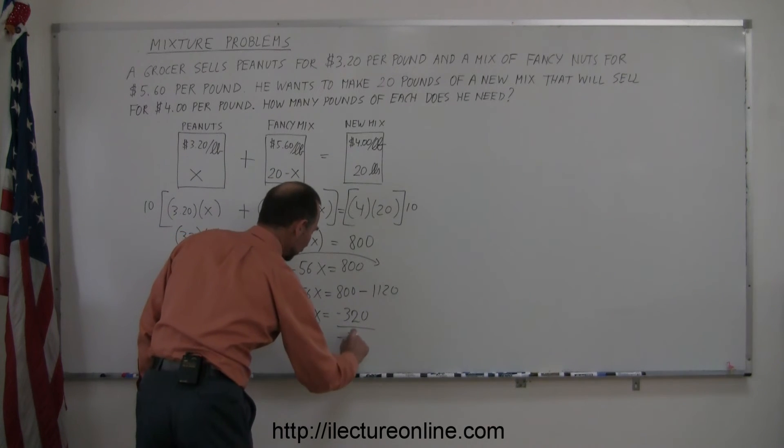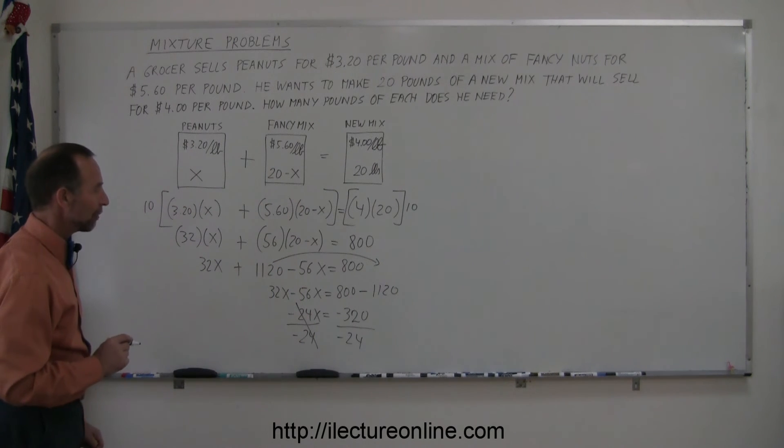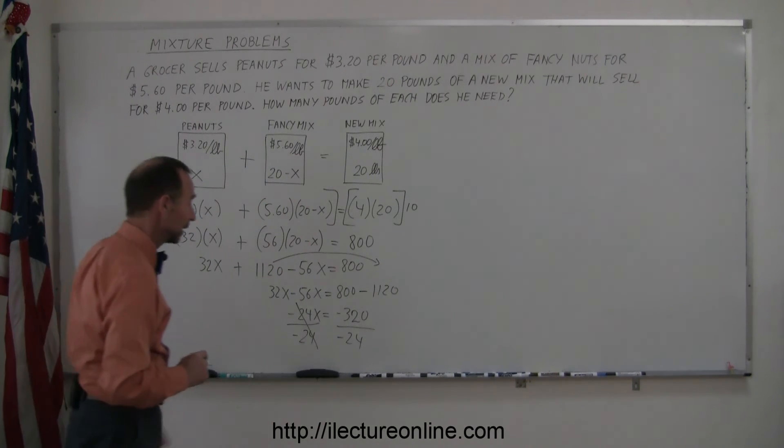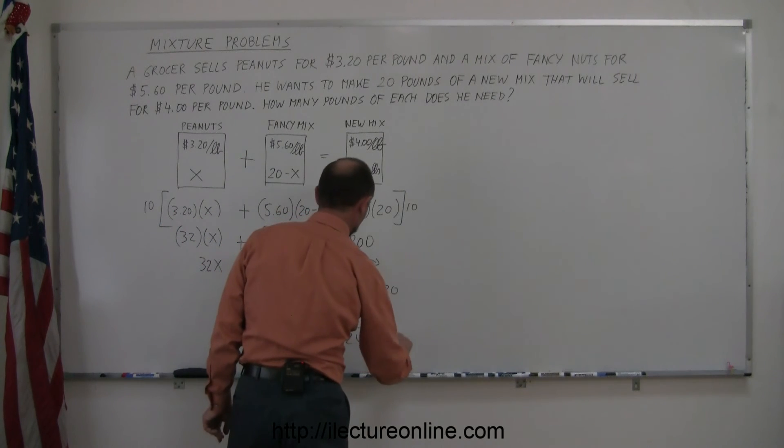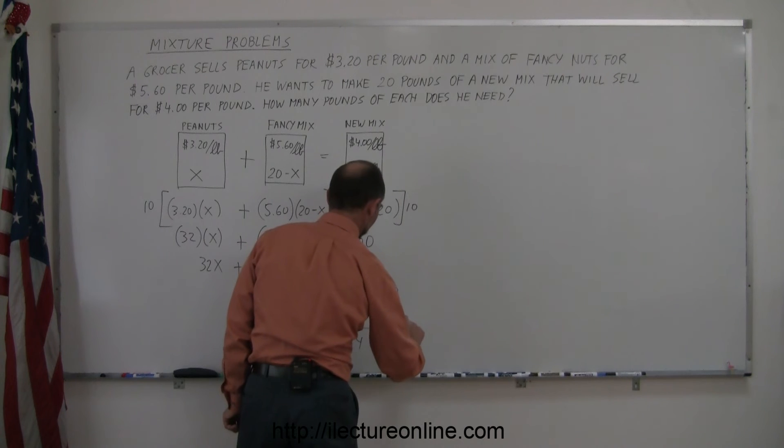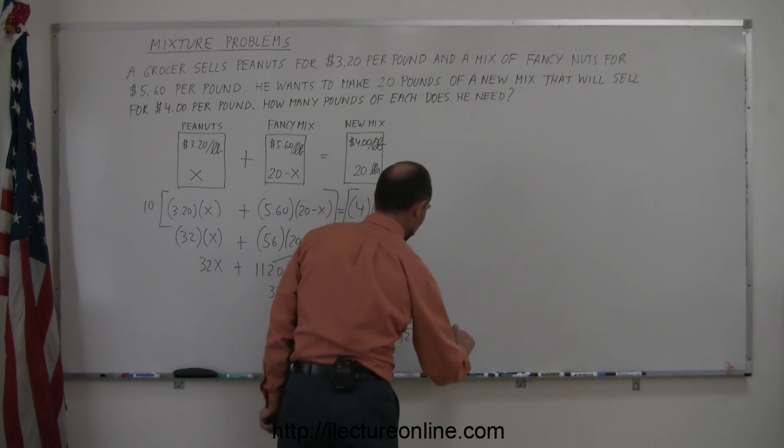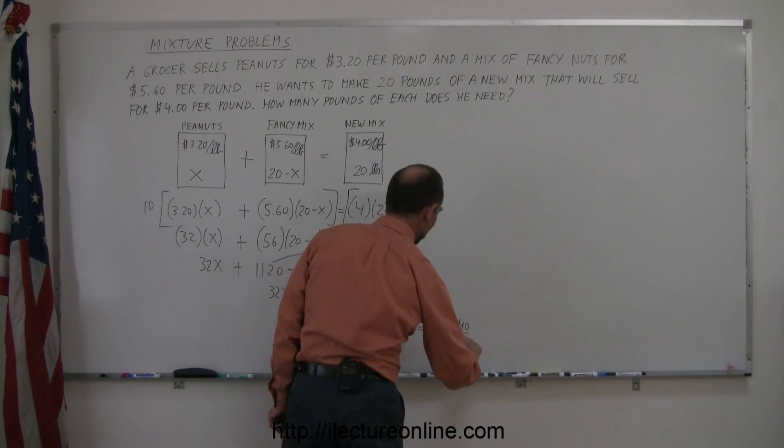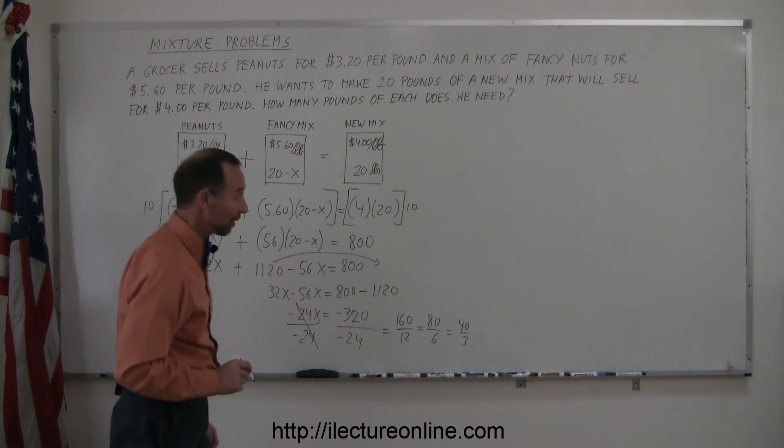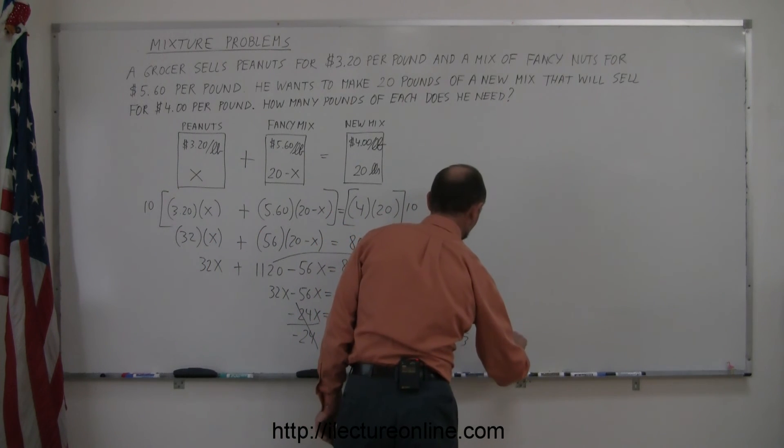Now dividing both sides by the coefficient of X, minus 24, minus 24 cancels out, and 320 divided by 24. Dividing both sides by 2 gives us 160 over 12. Divide by 2 again, that gives 80 over 6. Divide by 2 again, that gives 40 over 3. 40 divided by 3 is 13 and a third.